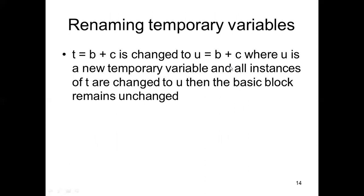For renaming temporary variables: if you have T = B + C, you can change the temporary variable T to U. When you change T to U, this does not change any output. U is a new temporary variable, all instances of T are changed to U, and the basic block remains functionally unchanged.